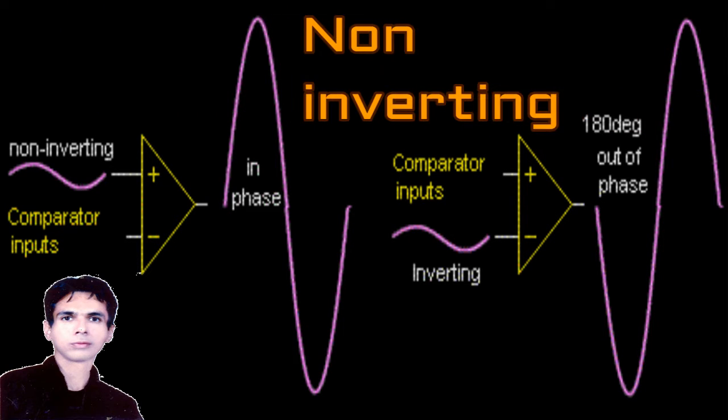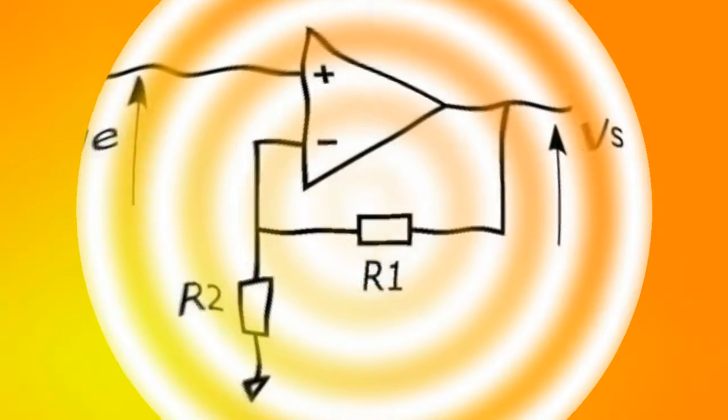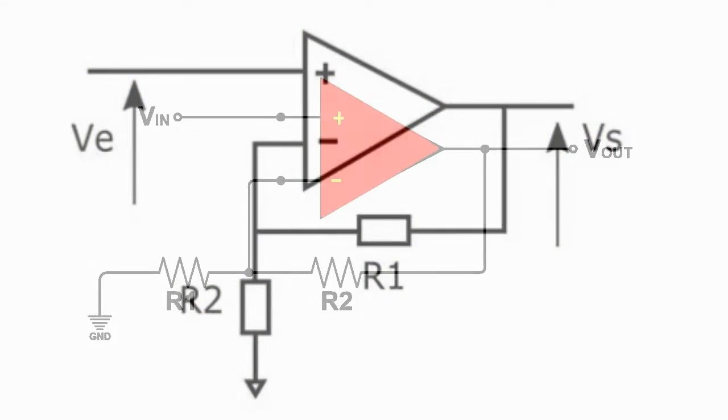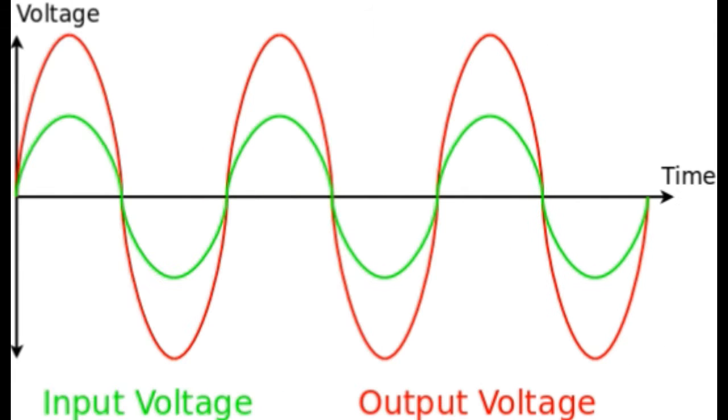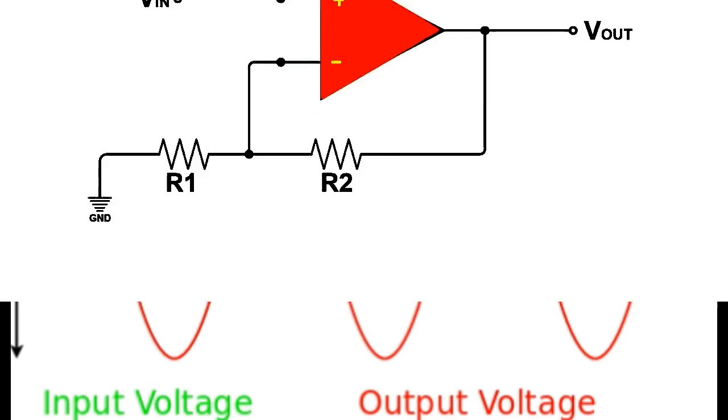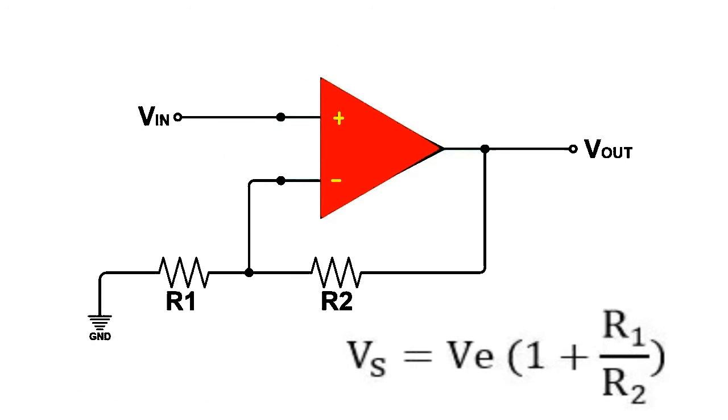3. Non-inverting Op-Amp. A non-inverting operational amplifier, Op-Amp, is a type of Op-Amp in which the output voltage is in phase with the input voltage. A non-inverting Op-Amp is used in applications that require signal amplification without providing phase inversion.